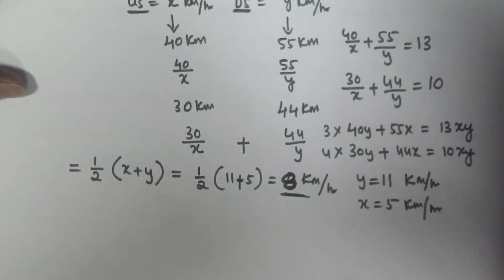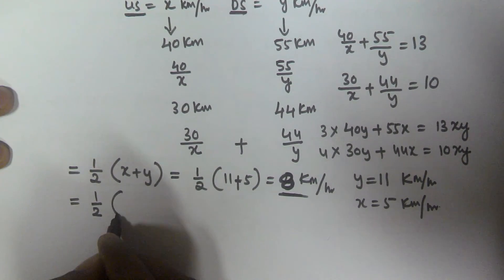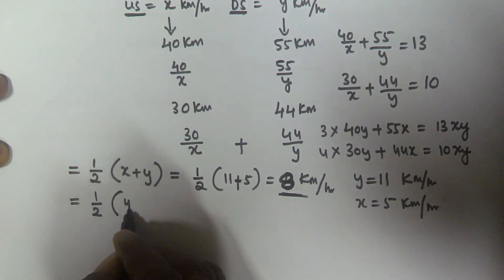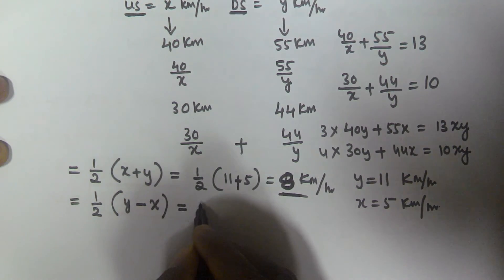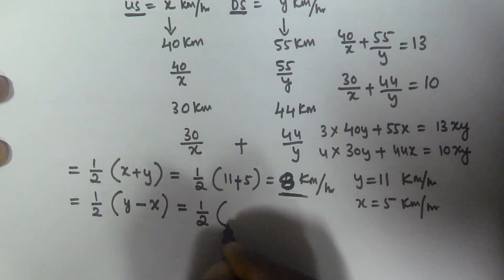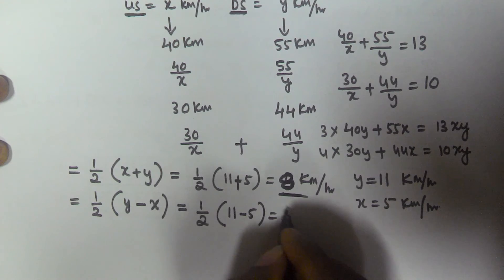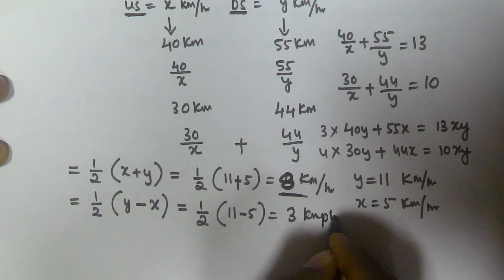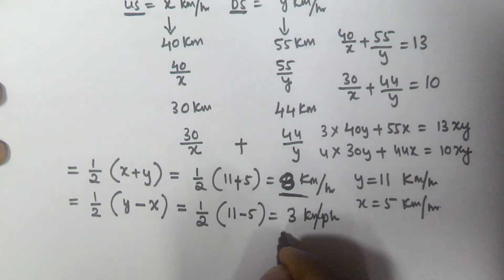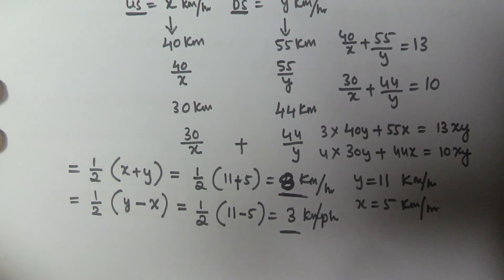The speed of the current is given by 1/2 of (downstream speed minus upstream speed), that is 1/2 of (11 minus 5), which is 6/2, giving us 3 kilometers per hour. So the speed of the stream is 3 kilometers per hour. I hope you got this one — thank you very much for watching this video, please subscribe to my channel.